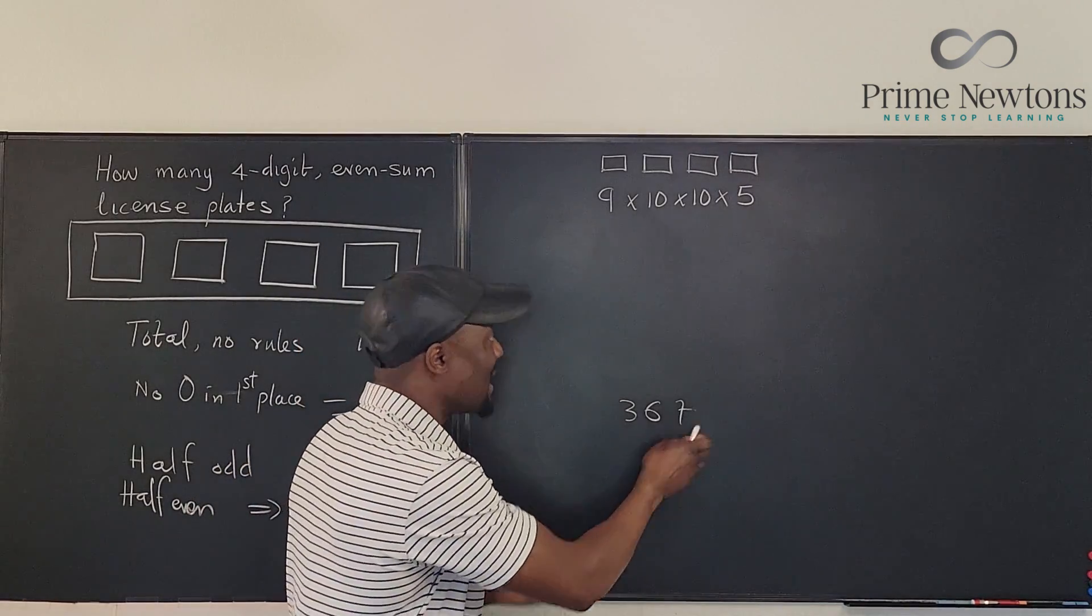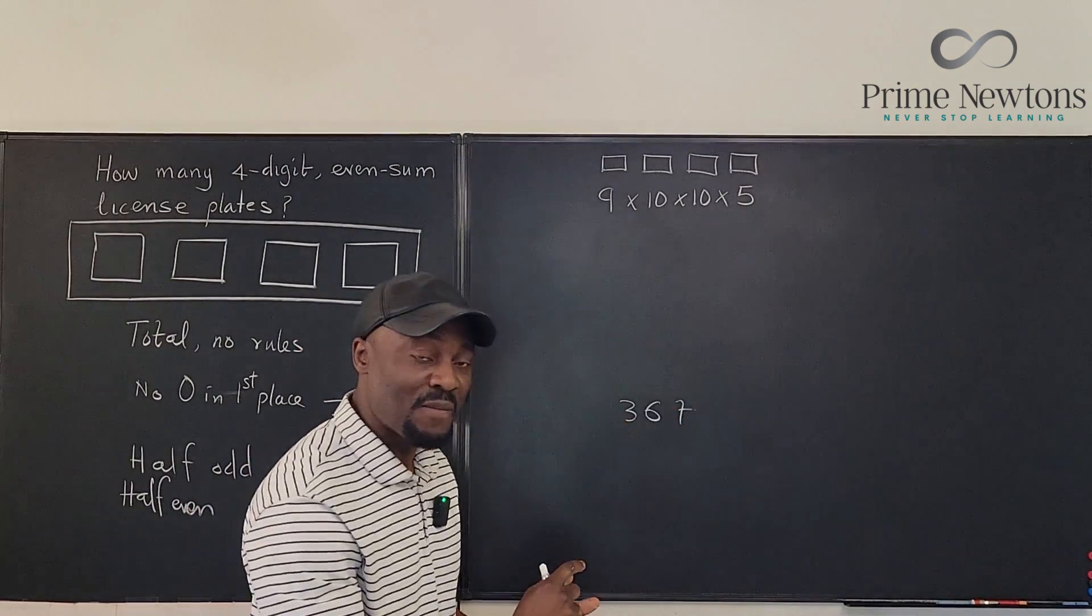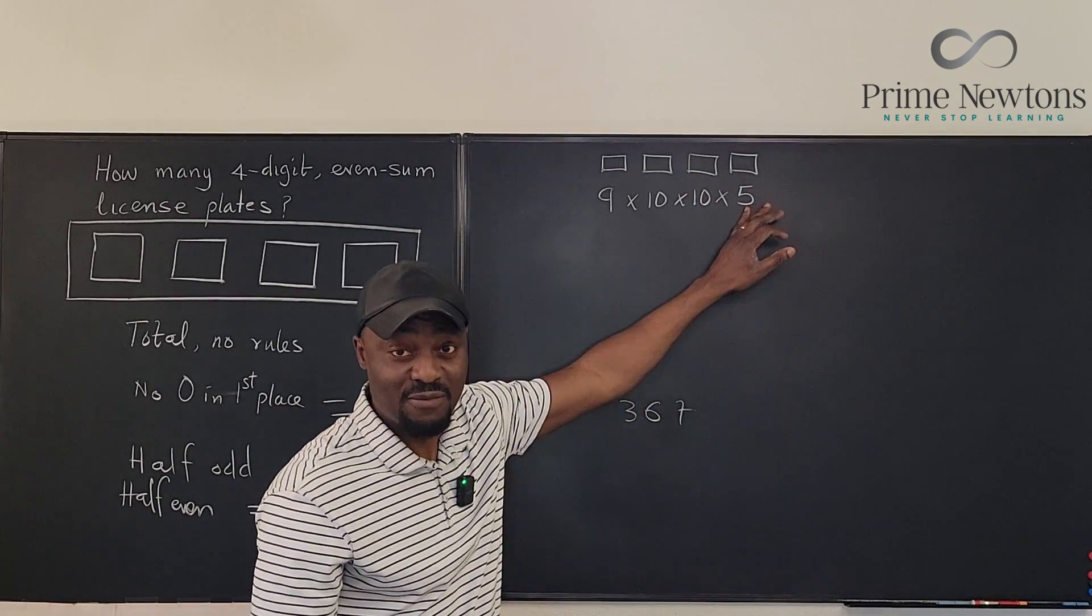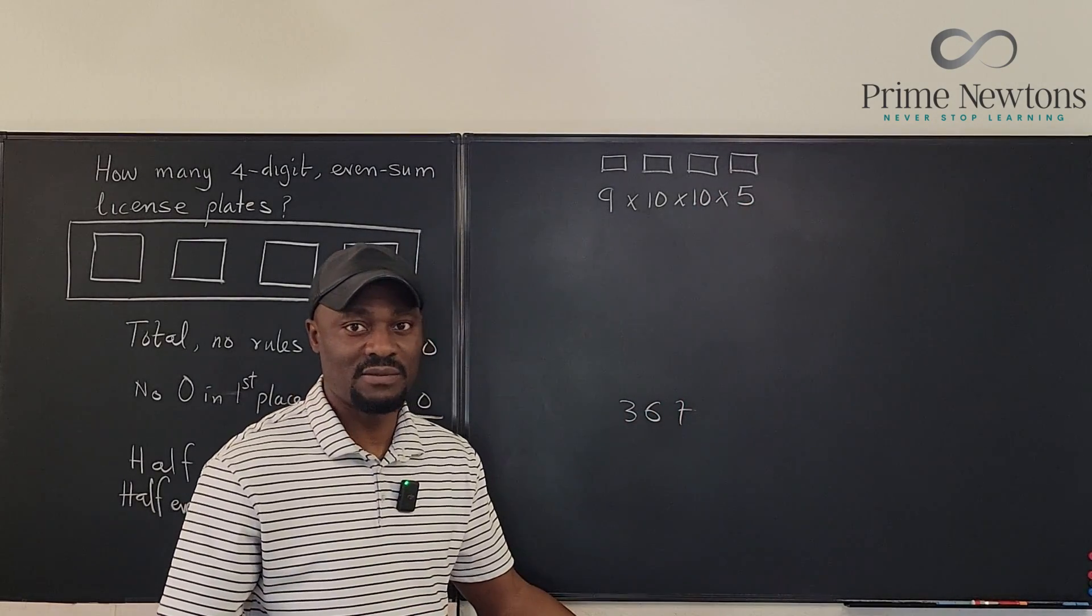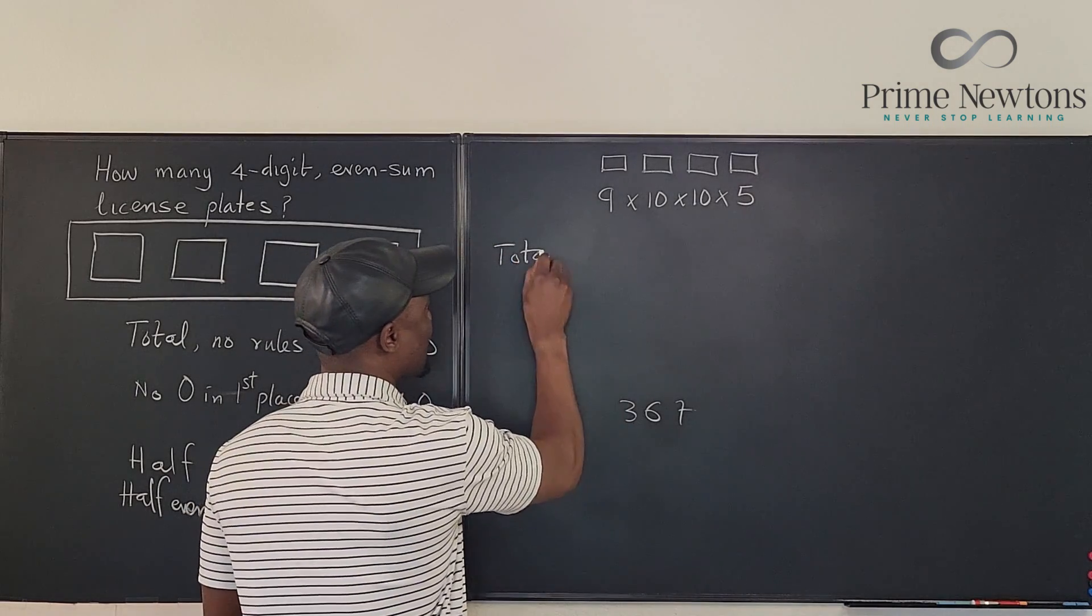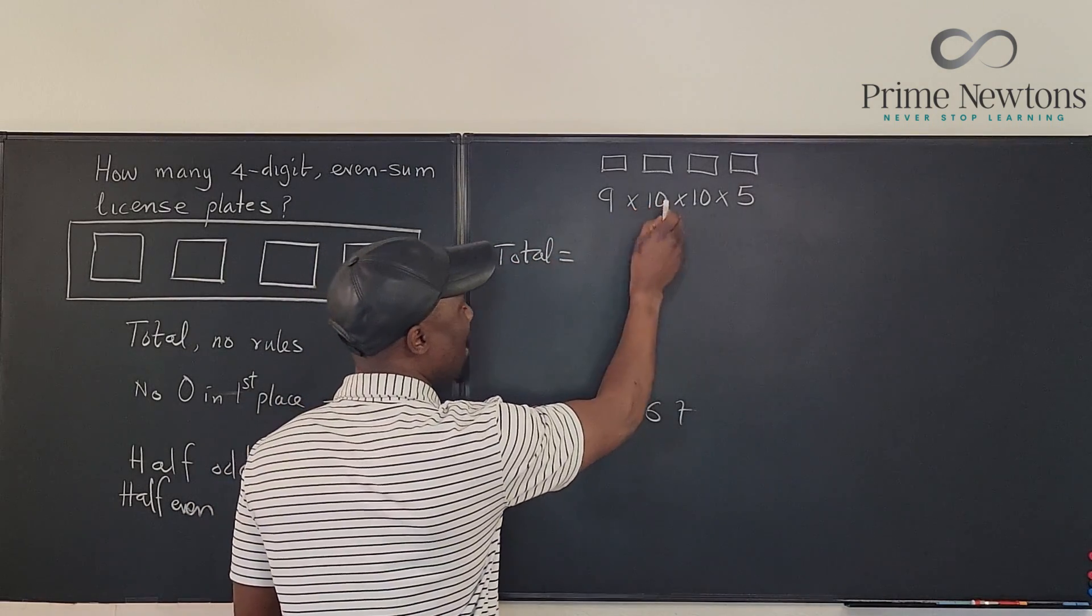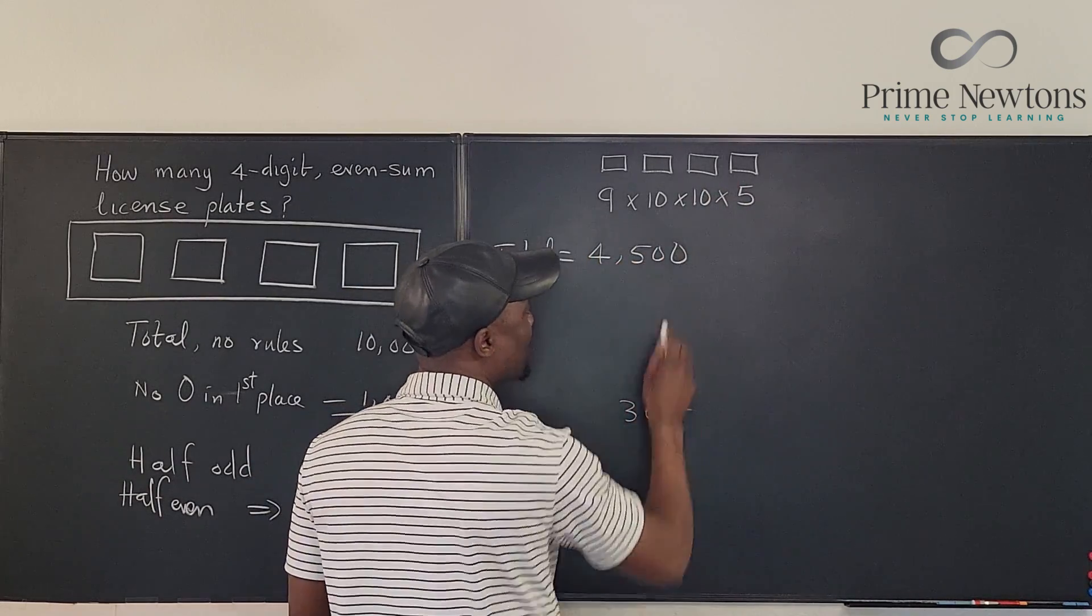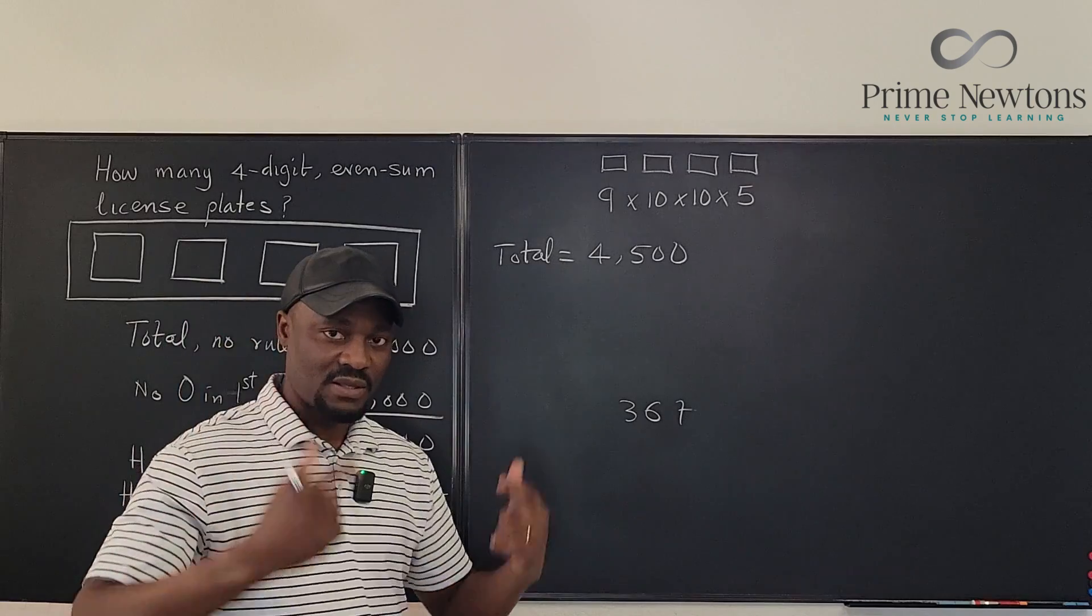So whether what I have here is even or the sum is odd, the last option I have will have to be restricted to 5. So our total is going to be 9 times 10 times 10 times 5, which is 4,500 by that reasoning.